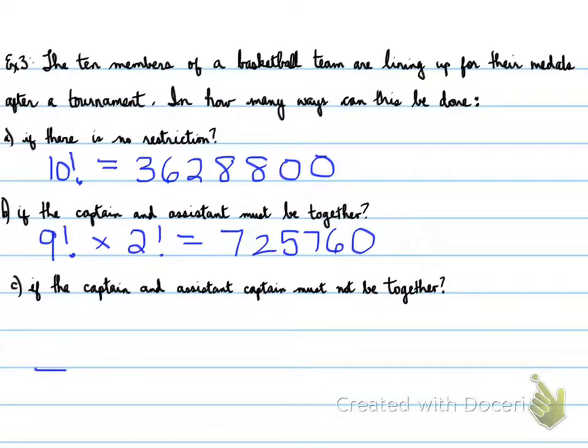Before we move forward with the next example, I want you to understand about the captain and assistant. I'm going to put 10 members on here: 1, 2, 3, 4, 5, 6, 7, 8, 9, 10. If it's no restrictions, it would be 10 × 9 × 8 × 7, so that's the 10 factorial. Here we have to be careful because the captain and assistant must be together. Essentially, we're taking two spots and saying they have to be joined. Does it matter where we put them? Not really. I can put them here, in the middle, at the end. It really doesn't matter. For simplicity's sake, I'm going to put them here. This counts as one position out of the total sets of positions.